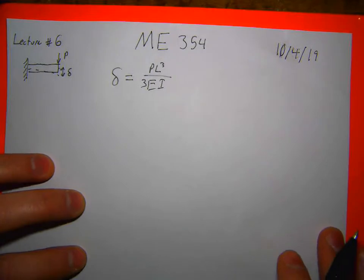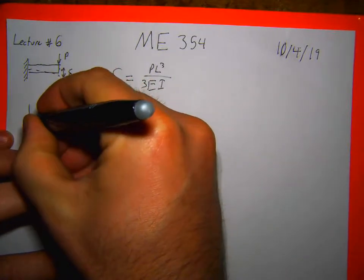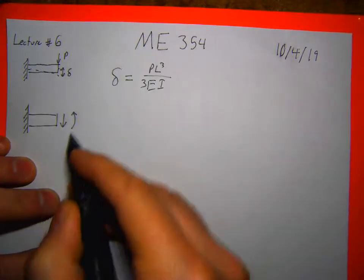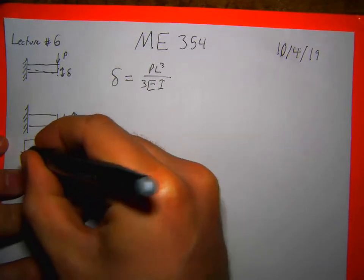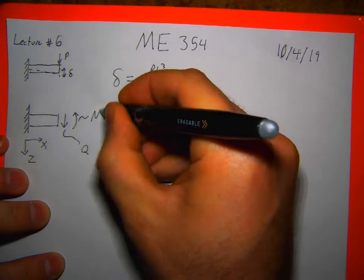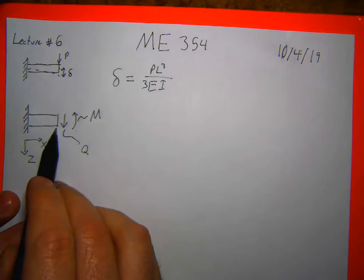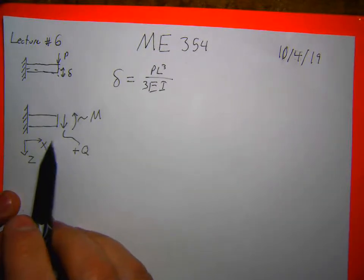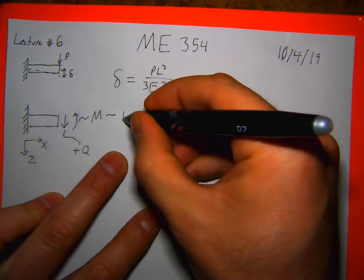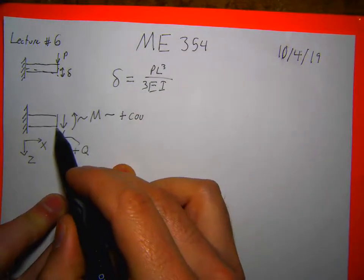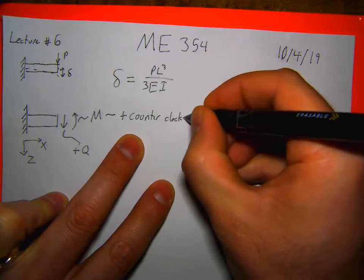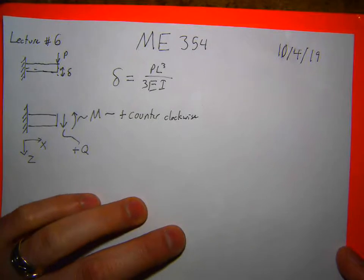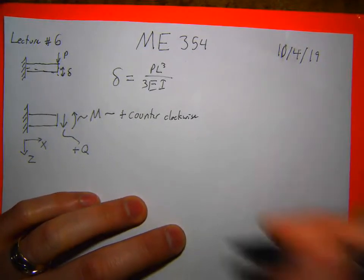One clarification for sign conventions. Say we have a cut section of a beam — I'm going to define my coordinate system: X and Z. I have some shear force Q and some moment. Positive moment on the right side of a cut face of a beam is going downward in the positive Z direction. And positive moment is counterclockwise on the left side of the cut face. I think this is generally true, although I feel like I've seen it mixed up one way or the other.